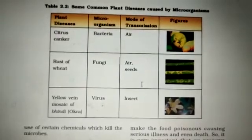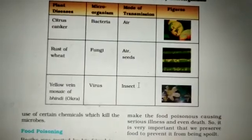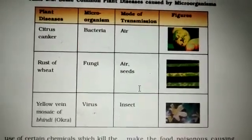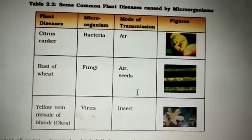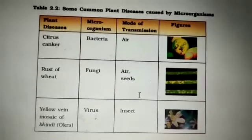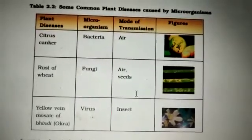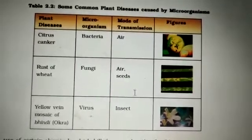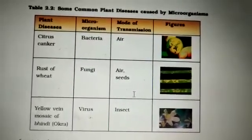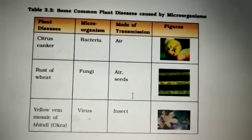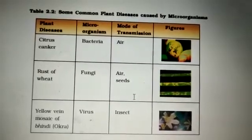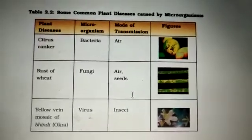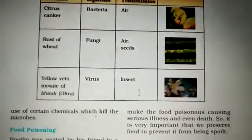These plant diseases can be controlled by the use of certain chemicals which kill the microbes. Some common plant diseases include citrus canker, caused by bacteria and transmitted through air, which spoils edible citrus fruits; rust of wheat, caused by a fungus and spread through air or seeds; and yellow vein mosaic of lady's finger (bhindi), caused by a virus and spread through insects. These can be prevented by using certain chemicals that kill the microbes.